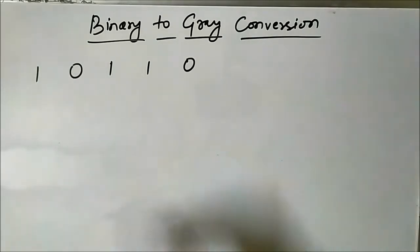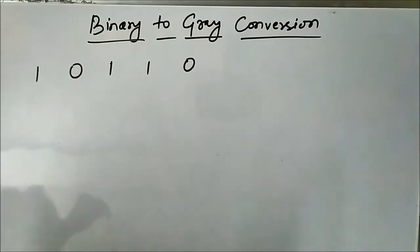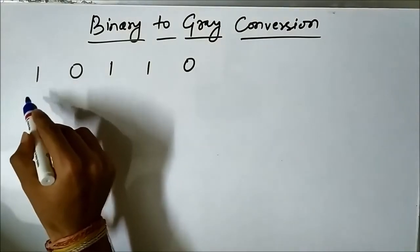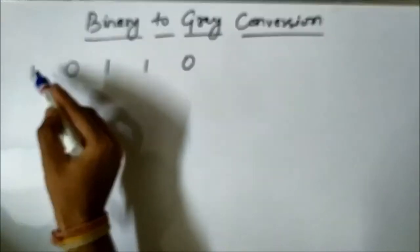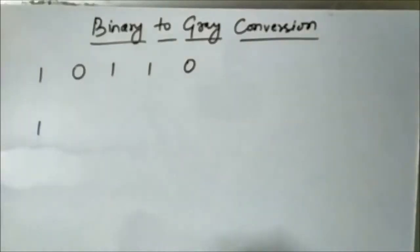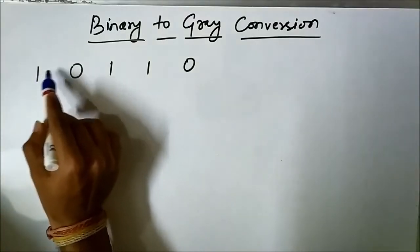Let us understand the step-by-step procedure of binary to gray conversion. It is very simple and straightforward, nothing complicated. The first step in binary to gray conversion is that you copy the MSB bit — whatever the MSB bit given in the binary code, you copy the same for the gray code. So the MSB bit of the binary and the gray code are the same.